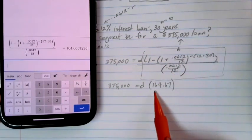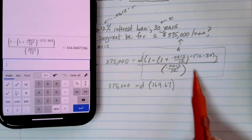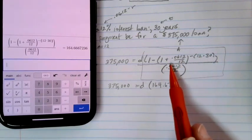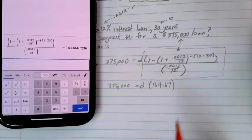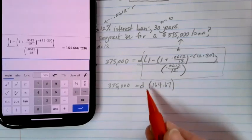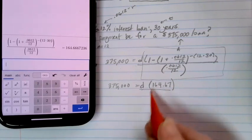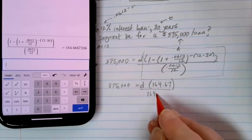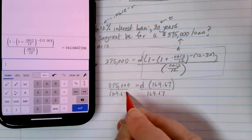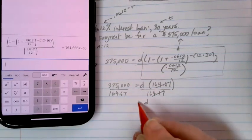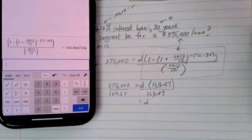Now keep in mind you're never going to be able to rent for $164. We've done a lot of calculations, but we haven't solved for D because the D is not by itself yet. So one last step here to get the D by itself: we're going to have to divide each side by this 164.67.